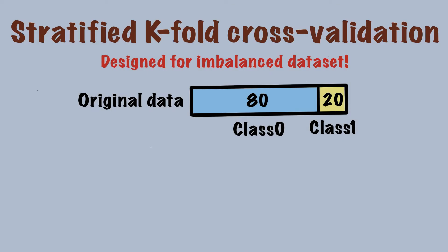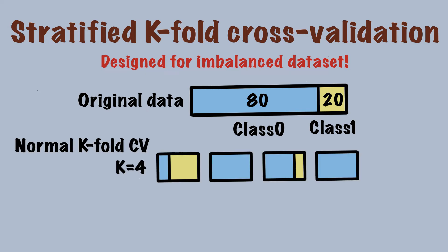To have a concrete idea, let's look at an example. Say we have this imbalanced dataset which has 80 data points in class 0 and 20 data points in class 1. Suppose k equals 4 and we randomly split the data — we might end up with very different class distributions in each fold. Specifically, two folds don't even have data from class 1, and one fold contains most of the data from class 1.